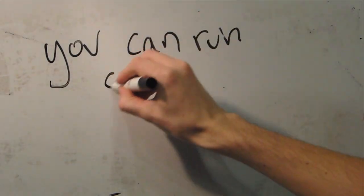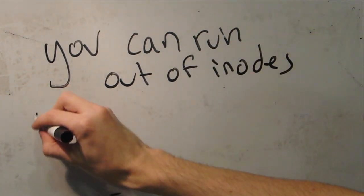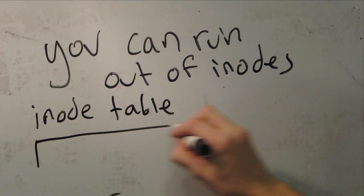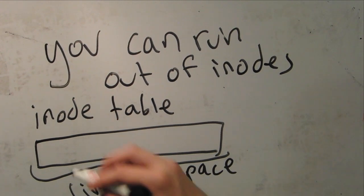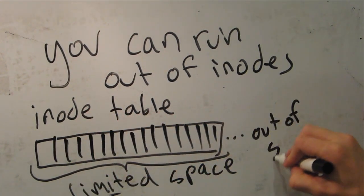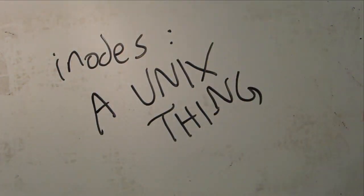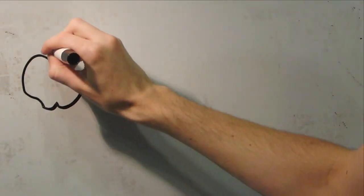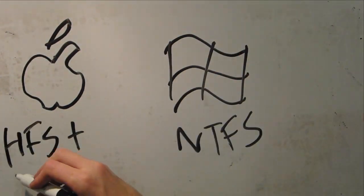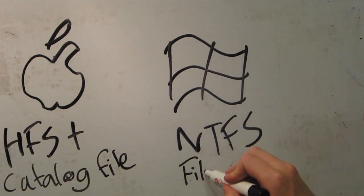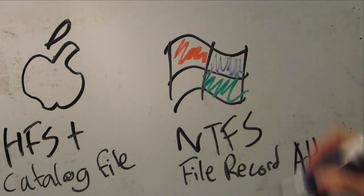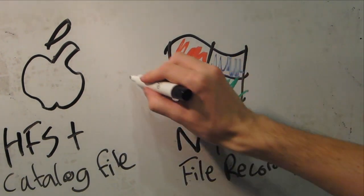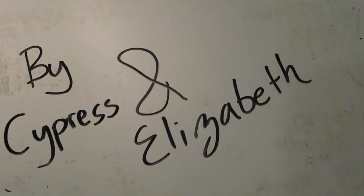Representing files as a table of inodes has some interesting side effects. For example, you can run out of file space without actually running out of disk space. Your inode table is a limited size, and if you have a whole ton of really tiny files, you might run out of spaces in your inode table before you run out of disk space. It's worth noting that inodes are a Unix thing. Apple and Microsoft both have their own file systems. Apple's HFS Plus uses a catalog file, which is analogous to inodes. Microsoft's NTFS uses file record attributes, which serve the same purpose.